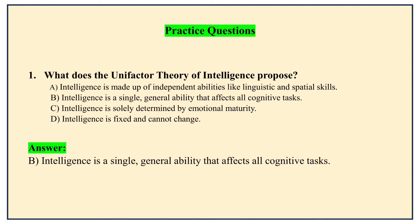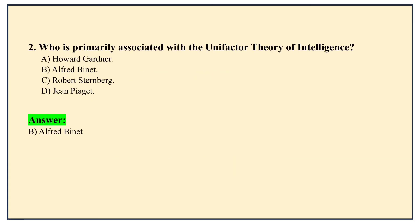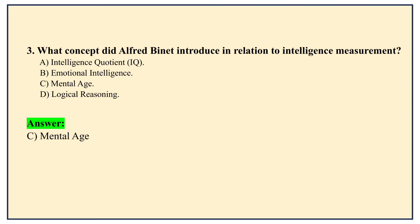Now let's look at some practice questions. What does the Unifactor Theory of Intelligence propose? The answer is option B. Who is primarily associated with the Unifactor Theory of Intelligence? Alfred Binet. What concept did Alfred Binet introduce in relation to intelligence measurement? Answer C — Mental Age. Who created the intelligence test? Alfred Binet. This is the Unifactor Theory.